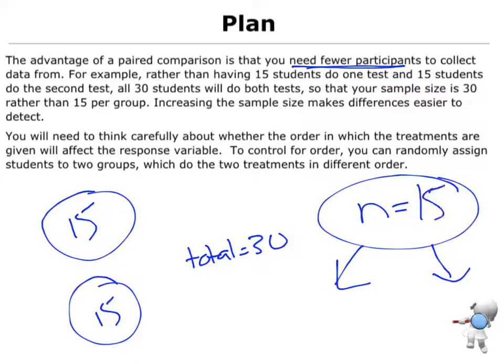if I had a sample size of 15, it means when I do the first test, I'm going to get 15 results. When I do the second test, I'm going to get 15 results. So, that's a big advantage, is I do not need as many participants to be able to do it.